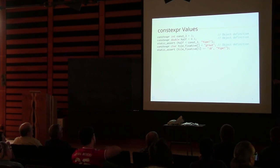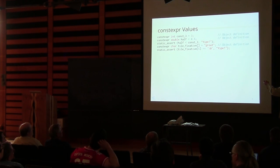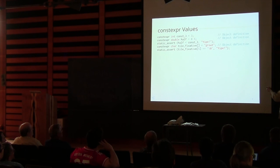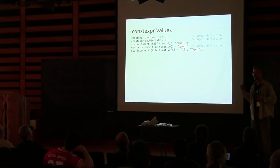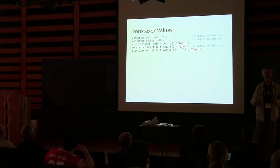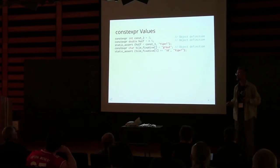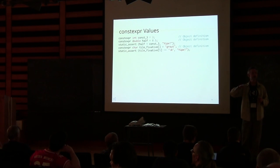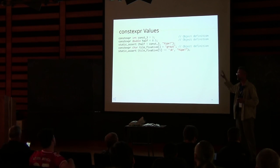For example, we have constexpr half, which is 0.5, and I can do a static assert with that. Prior to this, compilers didn't really have compile-time support for floats. Now I can start doing floating point computations and looking at the results of floating point computations at compile time. A static assert is something that, if it fails, your compiler gets in your face.